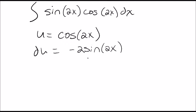If we do it this way, we don't have the negative 2 sine 2x in our problem, so I have to put in a negative 2, which means I have to multiply the outside by negative 1 half.